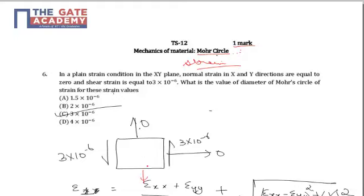Here it is given that there is a block, a two-dimensional block which is subjected to zero strains in x and y directions but it is subjected to shear strain of magnitude 3 into 10 to the power minus 6. So it is asked what will be the diameter of Mohr circle of strain that is resulting because of these present strains.